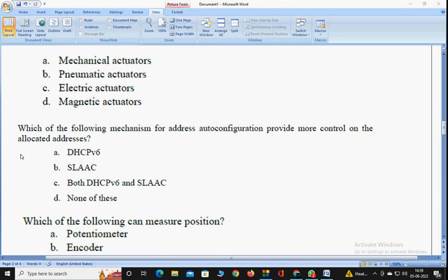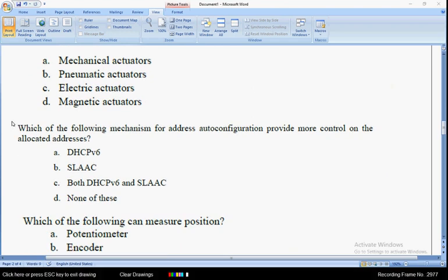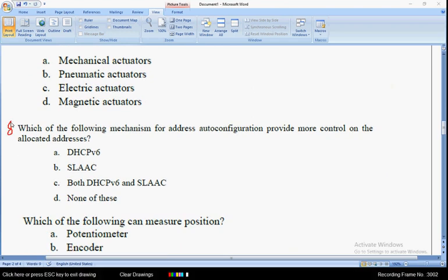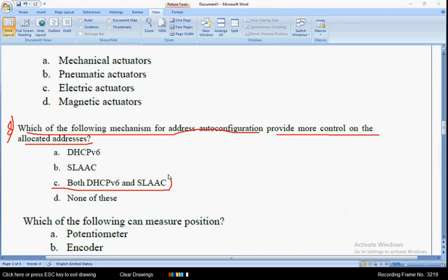Coming to the eighth question: which of the following mechanism for address auto-configuration provides more control on the allocated addresses? The answer for the eighth question is option C: both DHCPv6 and SLAAC.